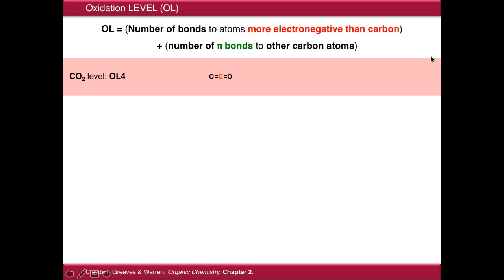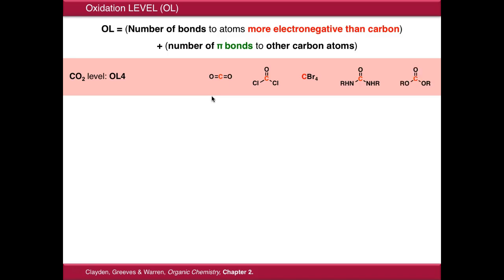The highest oxidation level we can achieve is oxidation level four. That's where our carbon atom is making four bonds to atoms which are more electronegative than carbon. We give this the informal name the CO2 level, because CO2 is the simplest example. But it also includes things like phosgene, tetrahalides like carbon tetrabromide, ureas, and carbonates — anything where carbon is making four bonds to atoms more electronegative than carbon.